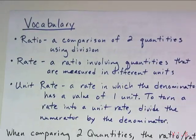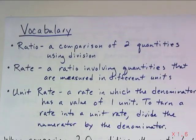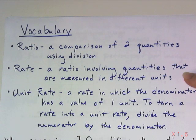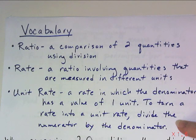Let's look a little bit more specifically at the definitions that we need. So first of all, a ratio. A ratio is a comparison of two quantities using division. Specifically, a rate is a ratio involving quantities that are measured in different units. But then when you get to unit rate, a unit rate is a rate in which the denominator has a value of one unit. To take any rate and turn it into a unit rate, you just need to divide the numerator by the denominator in that original rate.